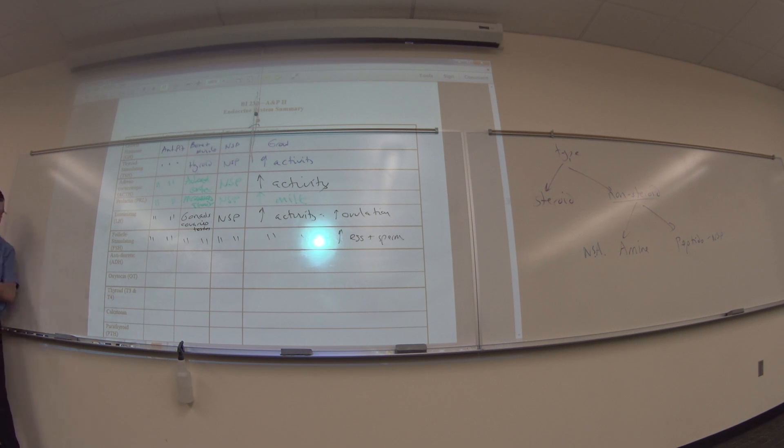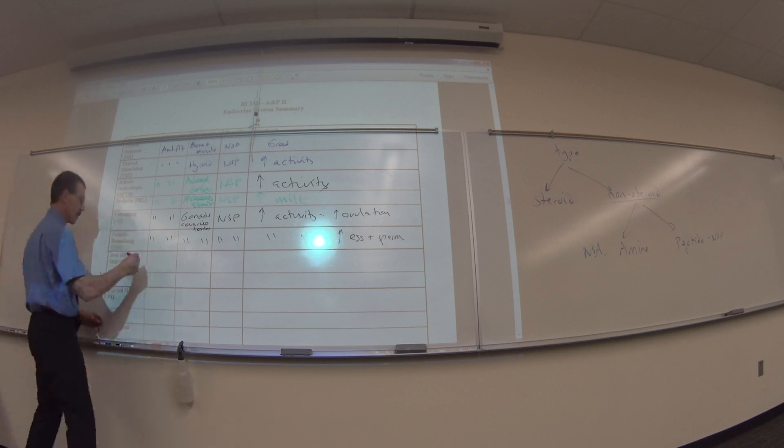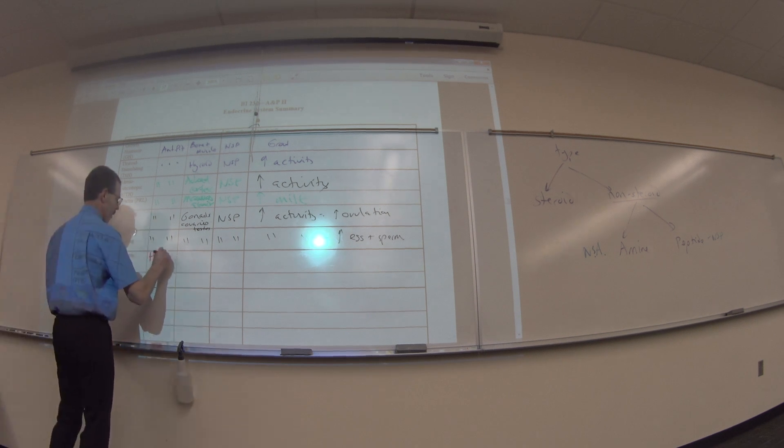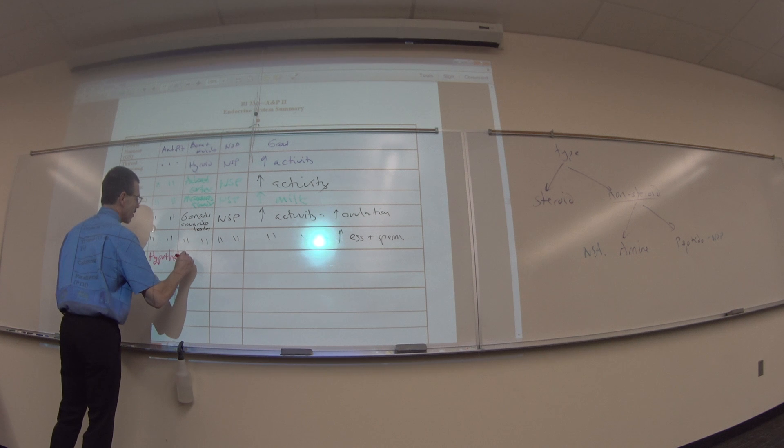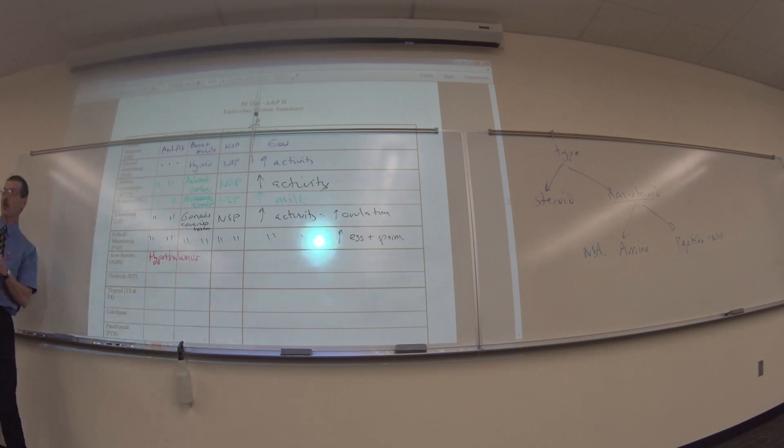Anti-diuretic hormone. Where's it made? Posterior pituitary. Wrong. Not posterior pituitary. Hypothalamus. It is. The book is not wrong. They're writing a different thing. I asked where it was made. The posterior pituitary is not where it's made. It's where it's released. Not manufactured. Because source is manufactured.